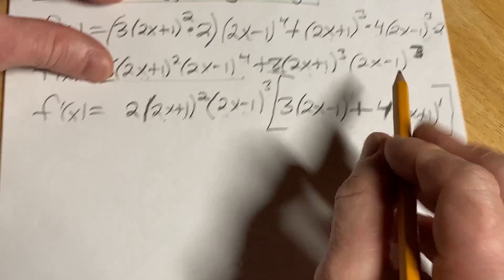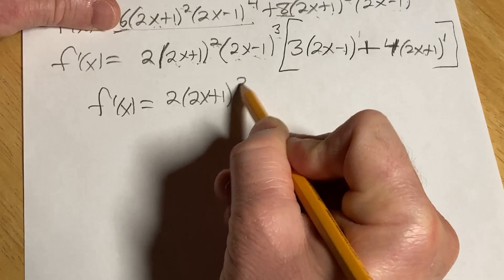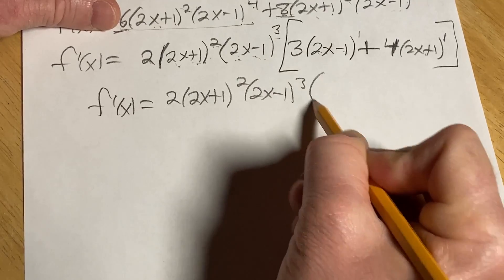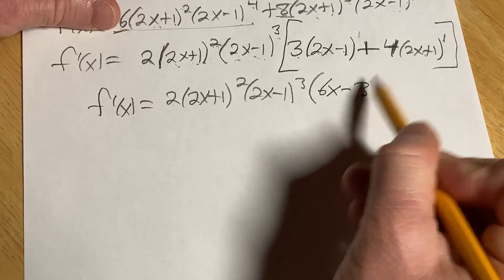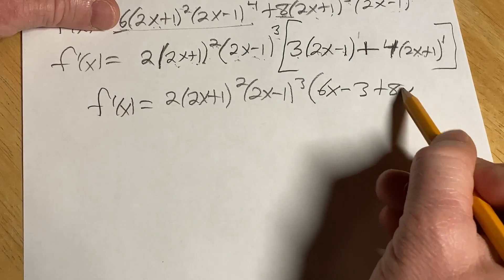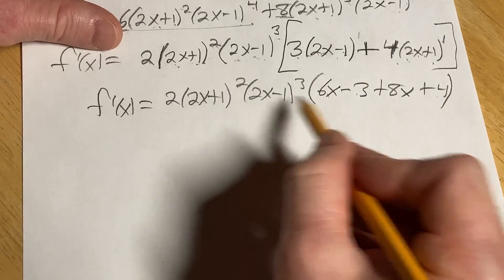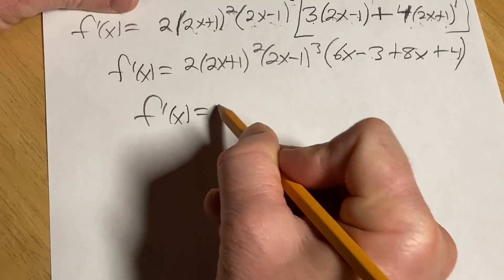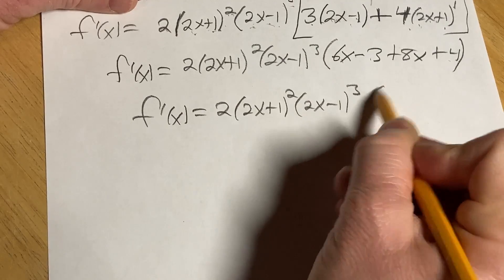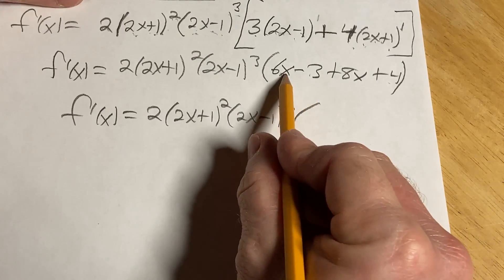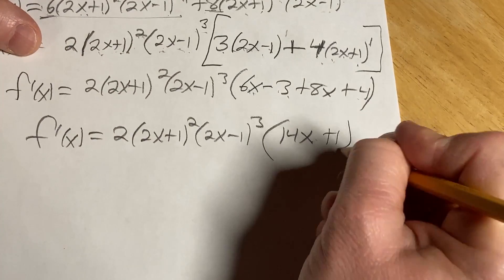All it's left to do now is clean this up. So f prime of x, 2, 2x plus 1 squared, 2x minus 1 cubed. 3 times 2x is 6x. 3 times negative 1 is negative 3. 4 times 2x is 8x. 4 times 1 is 4. All right, everything looks good. 6x minus 3, 8x, 4. Let's clean this up. 2, 2x plus 1 squared, 2x minus 1 cubed. And then here, what do we have? 6x plus 8x, that's a 14x. And then negative 3 plus 4 is 1. And this is the correct answer. This is it.